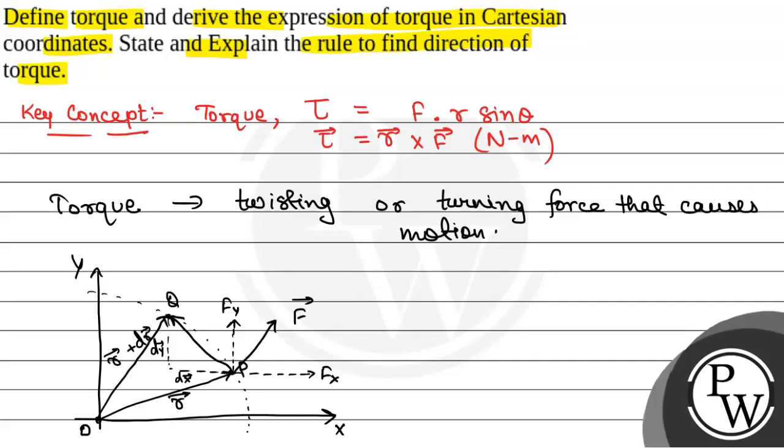Now this will be the displacement dx and this will be the displacement dy. So these are all the things. Now suppose this angle is theta and this is d theta.